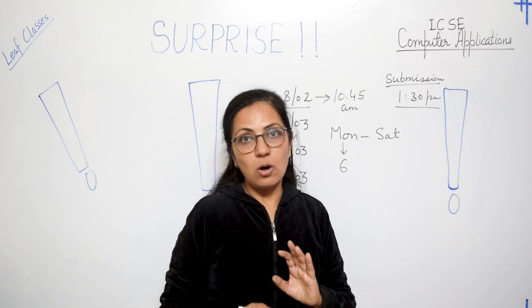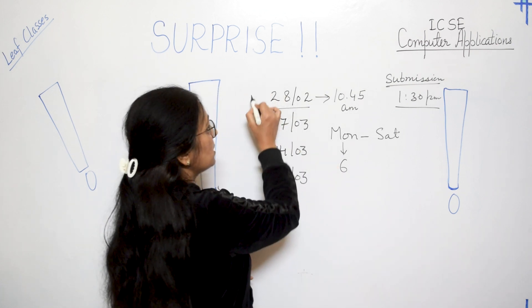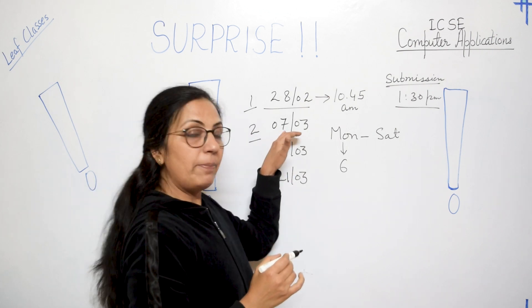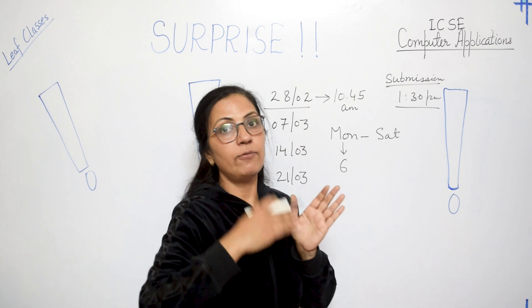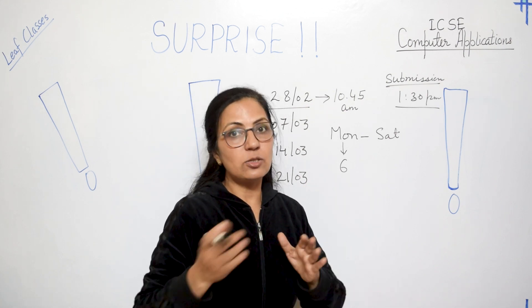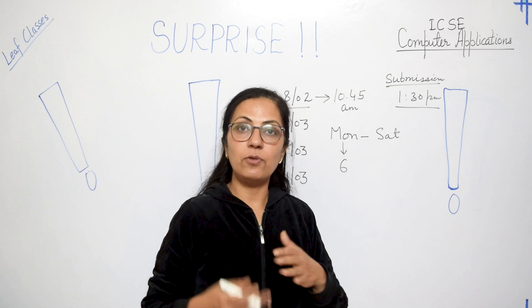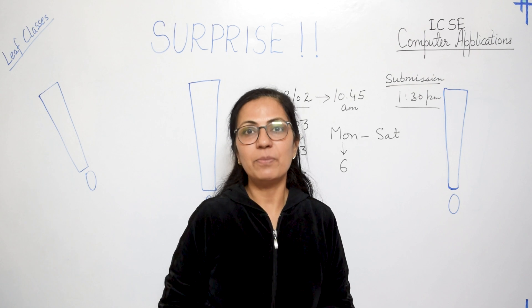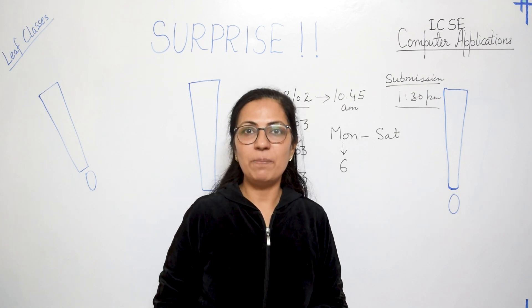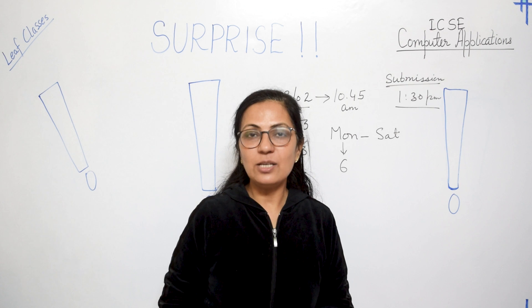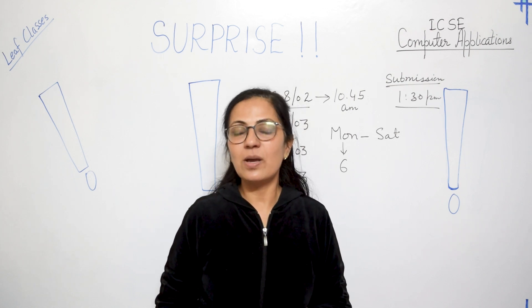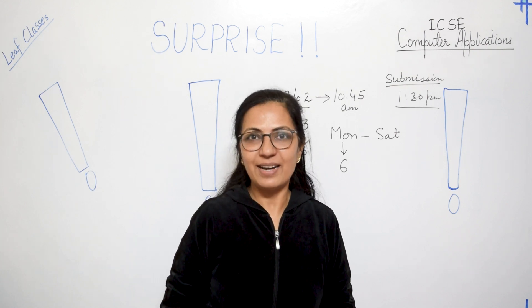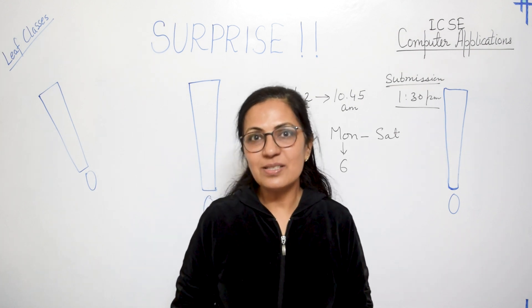Six children per day, Monday to Saturday — six times six equals 36 children total — will be called for the Zoom session for the first paper. Similarly, the second paper will be released the following Sunday, and the next week Monday to Saturday six children each day, 36 children total for the next paper. I think I am helping you in some way, so please attempt the question paper and try to do it on your own without looking into your book.